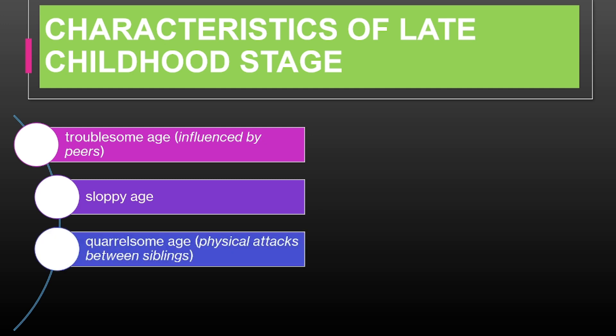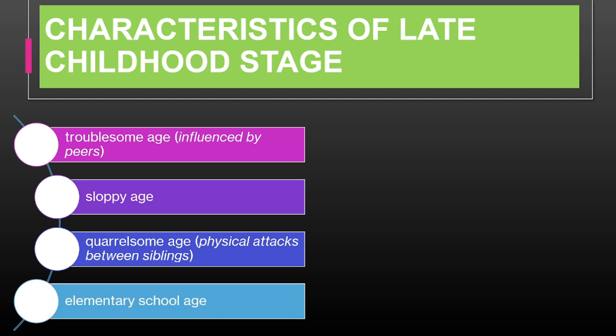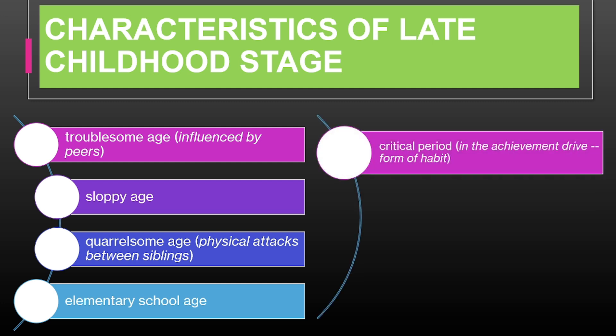Quarrelsome Age: conflicts with siblings or peers can occur as children assert themselves and test boundaries. A child might have frequent disagreements with siblings over shared toys or chores. Elementary School Age: this stage is marked by mastering academic skills and forming broader social interactions — educators describe this as the formal schooling age. Critical Period: there is a focus on achievement and developing habits that impact future learning. For instance, a child develops a routine for completing homework and practicing new skills like playing a musical instrument. These habits may determine whether they will be achievers as individuals.